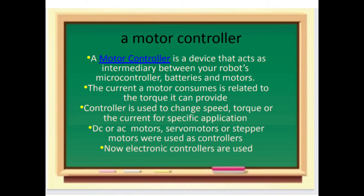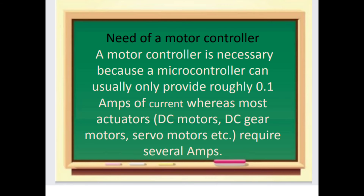Next is the need of a motor controller. A motor controller is necessary because a microcontroller can usually only provide roughly 0.1 amperes of current, whereas most actuators — DC motors, DC gear motors, servo motors, etc. — require several amperes.